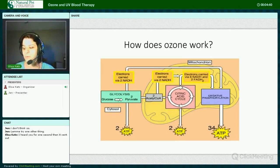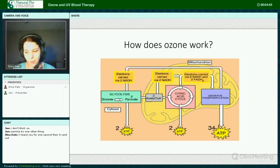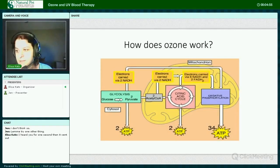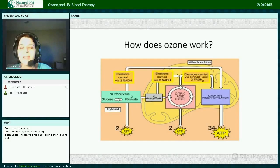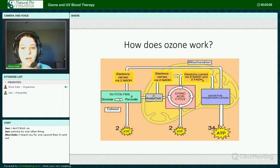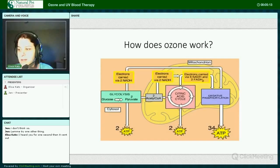It is important to understand how ozone benefits cells. A cell can produce energy using a few different pathways. One is called glycolysis, which occurs inside the cell but outside of the mitochondria. The other two pathways are called the Krebs cycle, also known as the TCA cycle, and the electron transport chain, also known as oxidative phosphorylation.